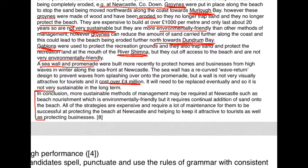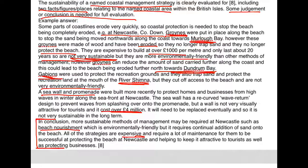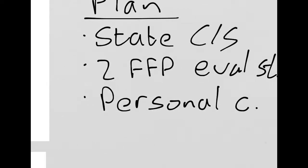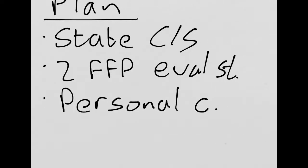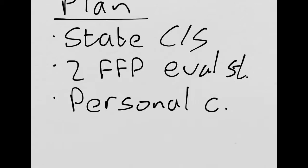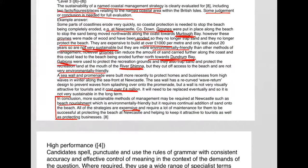This section is our personal conclusion. 'More sustainable methods of management may be required, such as beach nourishment, which is environmentally friendly, but it requires a continual addition of sand to the beach. All the strategies are expensive and require a lot of maintenance for them to be successful at protecting the beach in Newcastle and helping to keep it attractive to tourists as well as protecting businesses.' So a lot of detail in there for an 8-mark answer. You can see clearly that this relates to our plan: state the case study, two fact, figure, place full evaluations of strategies, and then some sort of personal comment at the end.